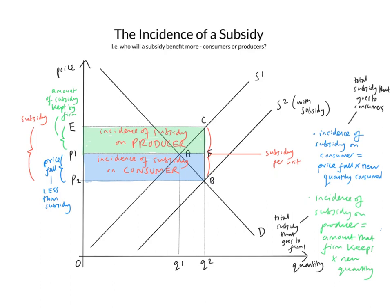In this case, we've got demand and supply curves that are neither elastic nor inelastic. There's the initial demand curve and the initial supply curve. Where they intersect, at A, we have our initial equilibrium. When we introduce a subsidy, we actually shift the supply curve out to the right. The vertical distance here, CB or EP2, is the per unit subsidy.